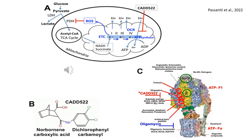Electrons travel through complexes 1 to 4, creating a proton gradient that drives ATP synthase, converting ADP to ATP.